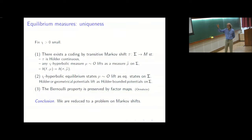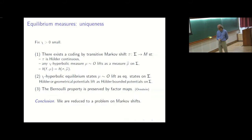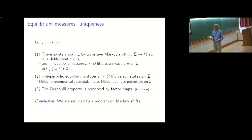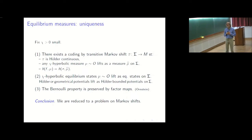There is also the case of geometrical potentials, which are only measurable. When you lift them, what you get is a Hölder continuous map. The reason is that the geometrical potential is defined by considering the unstable space, and the unstable spaces are only measurable but vary in a Hölder way on arbitrarily large compact subsets with arbitrarily large measure for any measure. In fact the splitting into stable and unstable bundles, which is only measurable, can be lifted as a bundle over the symbolic system and then becomes Hölder.